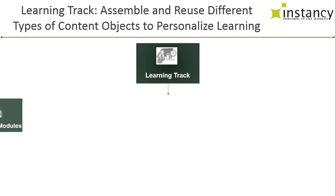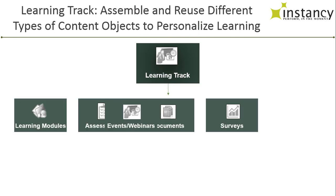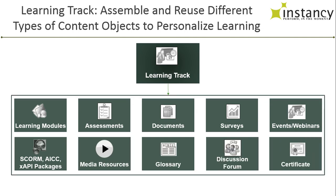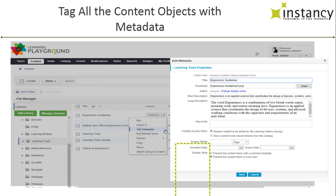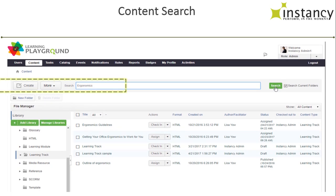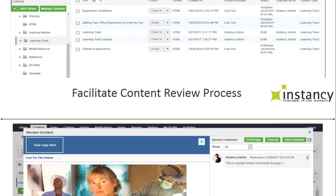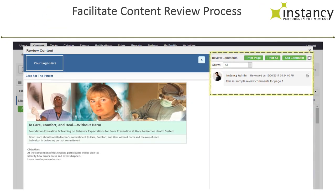You can create a learning track by sequencing content objects such as learning modules, assessments, and documents, and add rules to personalize the learning paths. Every content object in the ILCMS may also be tagged with metadata information such as a title and keywords to help authors easily find the content. Within the ILCMS, authors may submit their content for review and then use feedback comments from reviewers to improve the content.